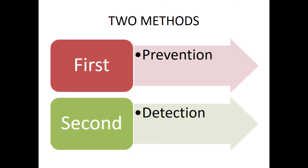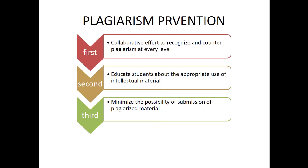The first method is simply prevention — preventing the practice of plagiarism. The second is detection of plagiarism. Prevention involves, first, a collaborative effort to recognize and counter plagiarism at every level. When writing anything, you should be very concerned about avoiding it. Second, we educate students about the appropriate use of intellectual material.